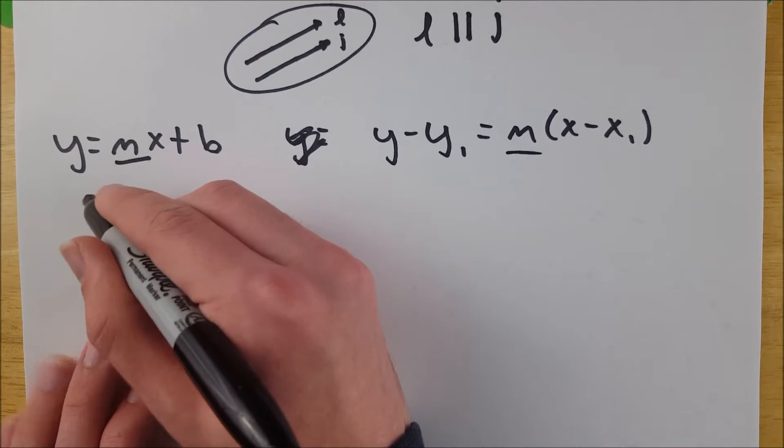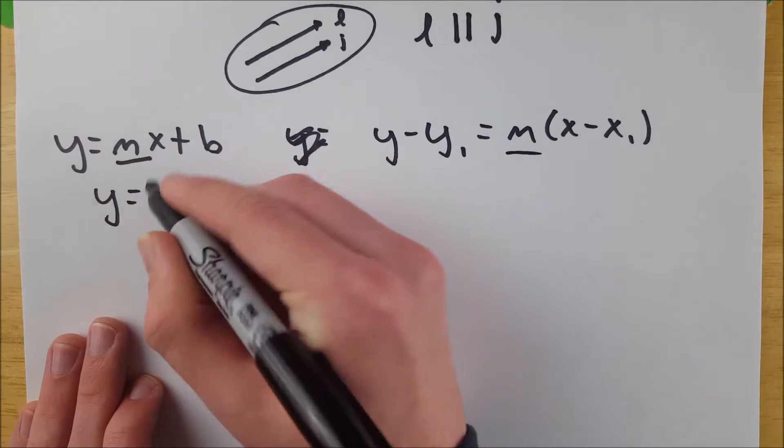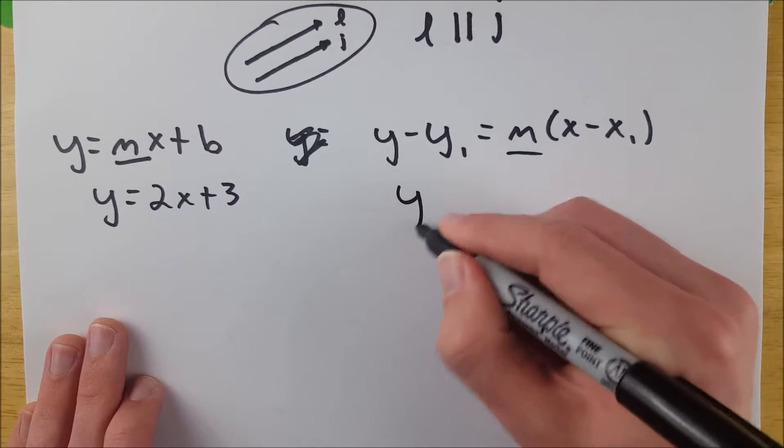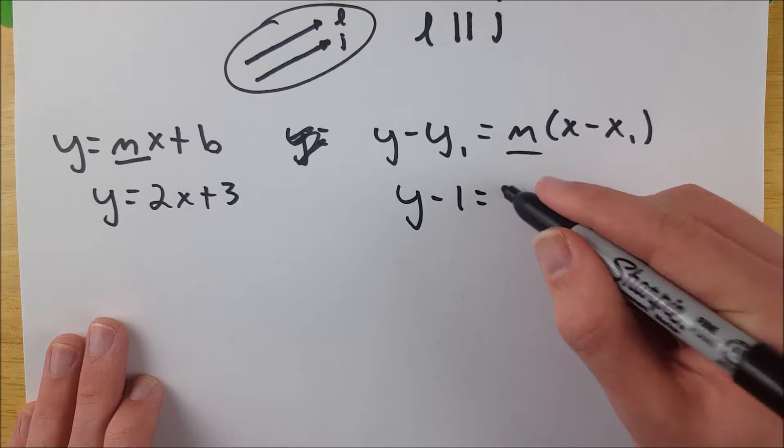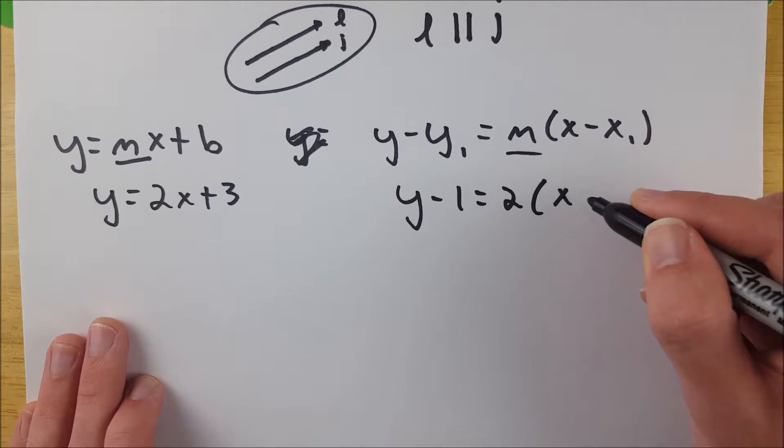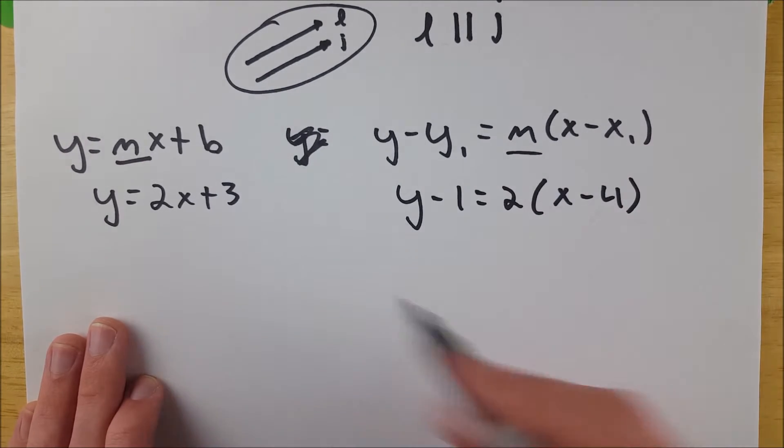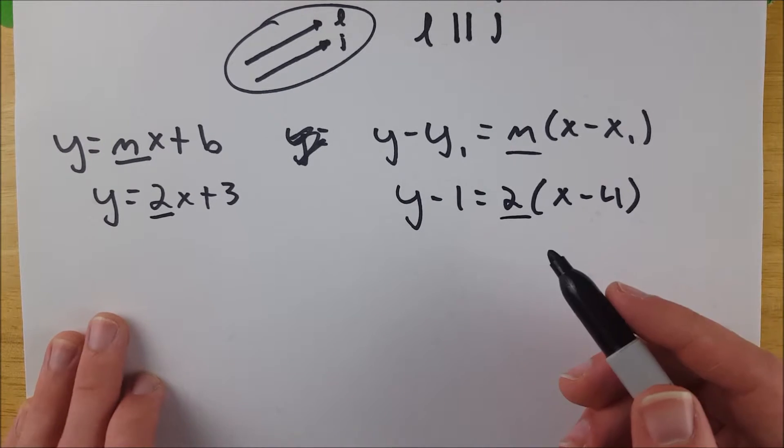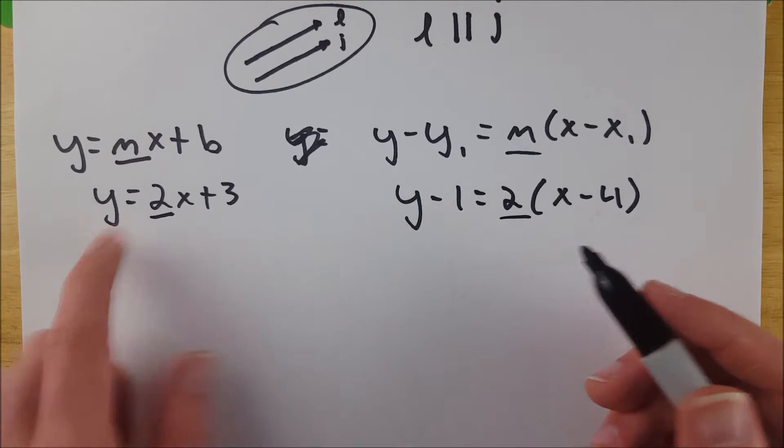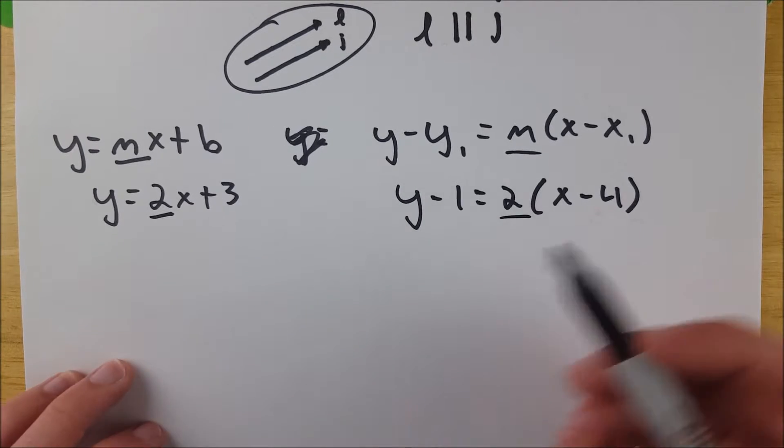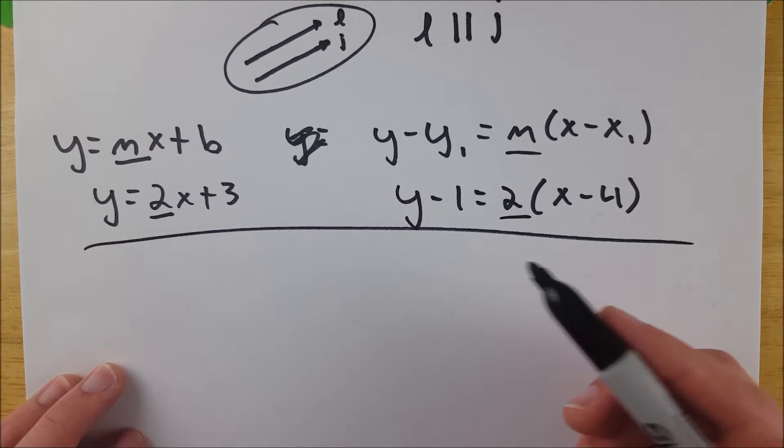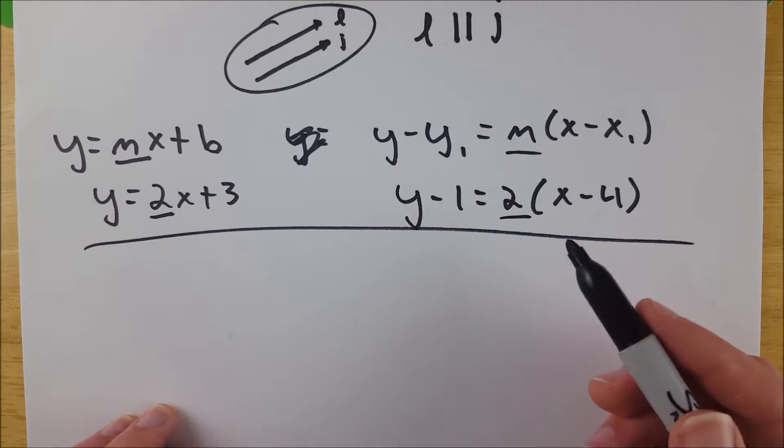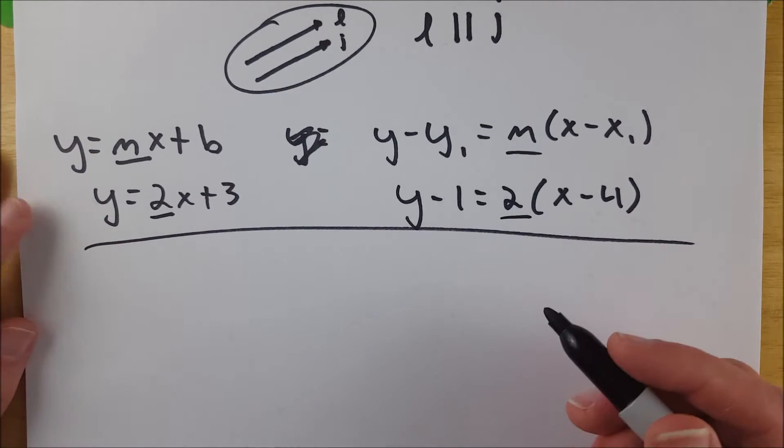So if you have one line that has the equation y equals 2x plus 3, and another line, let's say it's something like y minus 1 equals 2 multiplied by x minus 4, then here you know the lines are parallel because your m term is equal. If they weren't equal, you would know that this line is not parallel to this line. So those are the two easy ways. If you have equations for the line in slope intercept form or point slope form, it's super easy to just look at it and pick it out.